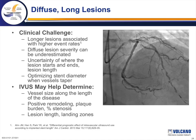How do we face the clinical challenge of diffuse long lesions, with higher event rates, more uncertainty regarding stent placement angiographically, and the need to optimize stent diameters over long vessel segments? Intravascular ultrasound can assist in pre-stent planning, allowing us to choose stent sizes and lengths that cover the entire extent of significant disease while providing optimal stent expansion and minimizing stent edge effects, which may in the long run lead to lower event rates and improved treatment of angina.